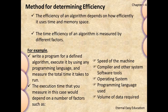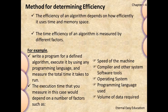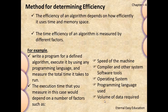The efficiency of an algorithm depends on how efficiently it uses time and memory space. For example, write a program for a defined algorithm, execute it using any programming language, and measure the total time it takes to run. The execution time depends on a number of factors: the speed of the machine, compiler and other system software tools, operating system used, programming language, and volume of data required. Based on these factors, we calculate the time requirement for the algorithm.